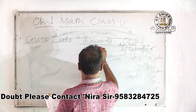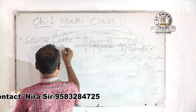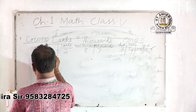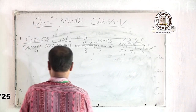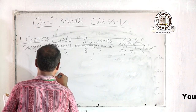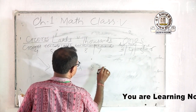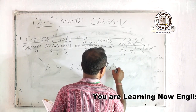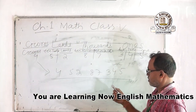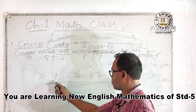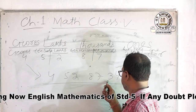The columns in the table are: thousands, ten thousands, lakhs, ten lakhs, and crores. Here is a number for you to write: 4 crores, 52 lakhs, 87,000, 345. You read it as: 4 crores, 52 lakhs, 87,000, 345.